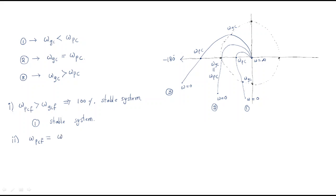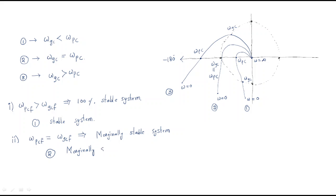The second condition: whenever phase crossover frequency is equal to the gain crossover frequency, the system is called a marginally stable system. For the second plot, gain crossover frequency and phase crossover frequency are both the same, so the second plot is a marginally stable system.